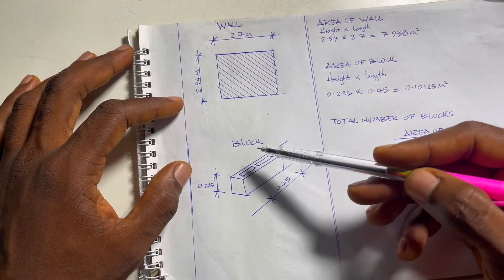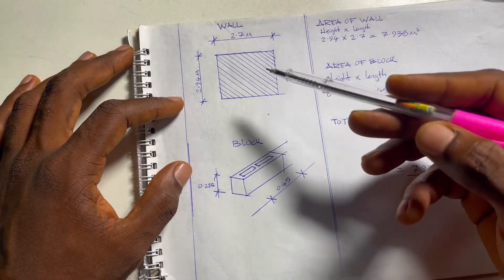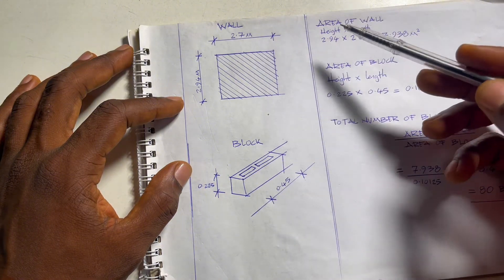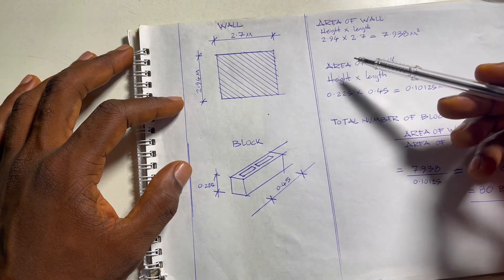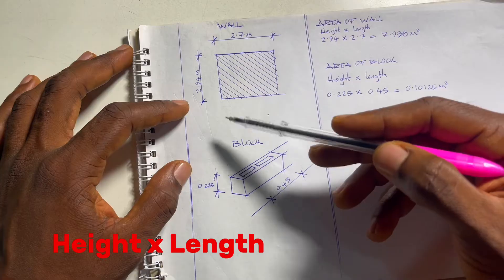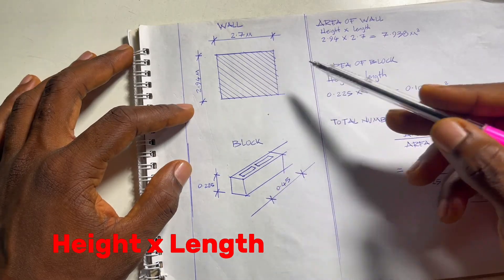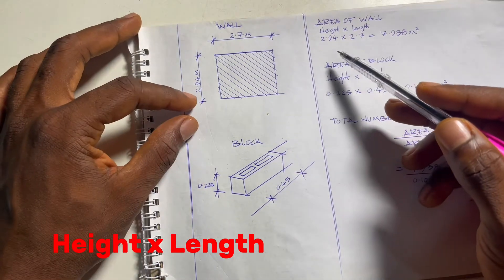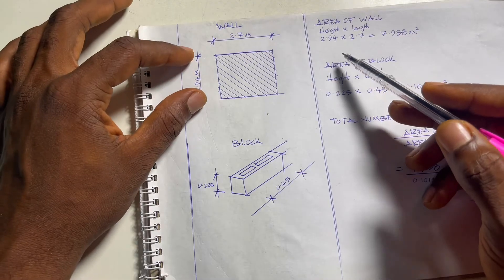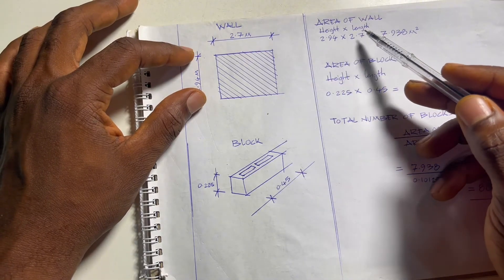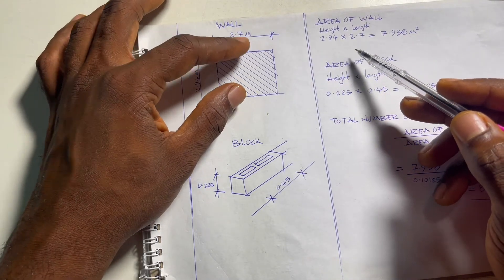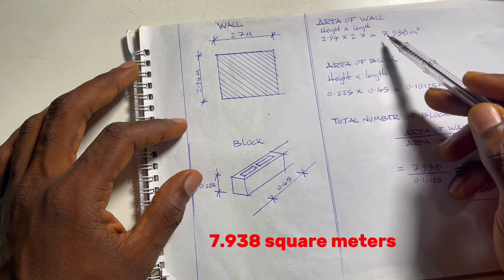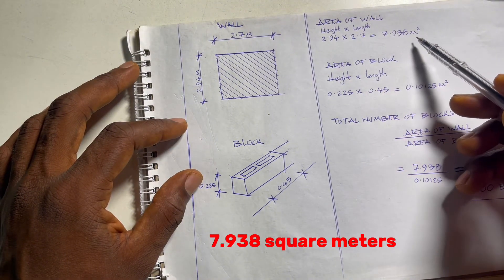With this information we're going to calculate the area of the wall and the block. For the area of the wall, typically to get the area we do height times the length. Our height is 2.94 meters times our length which is 2.7 meters and we have 7.938 square meters.